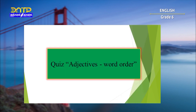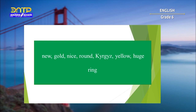Let's do a quiz with word order of adjectives. Here we have adjectives which describe a ring. They are: new, gold, nice, round, Kyrgyz, yellow, huge.